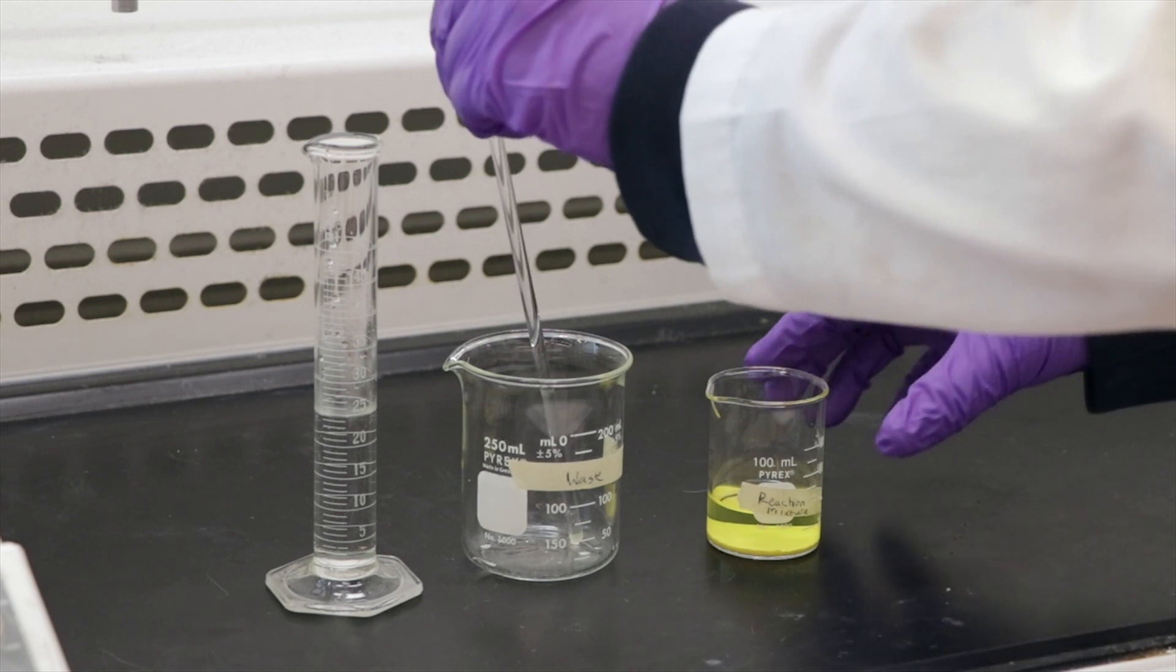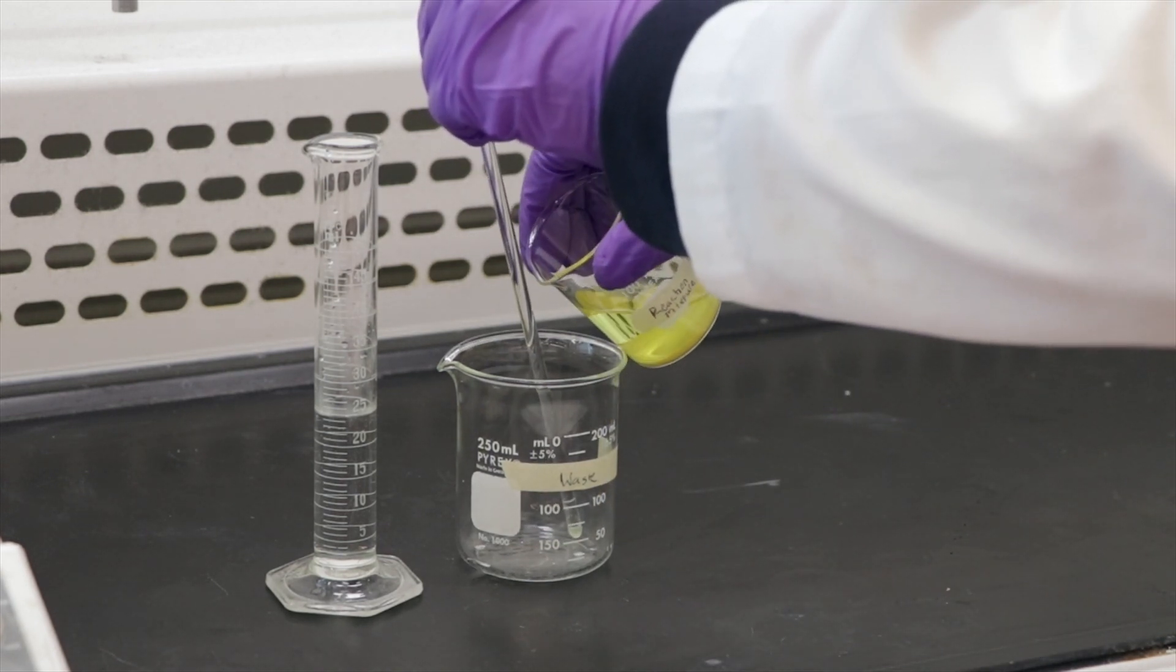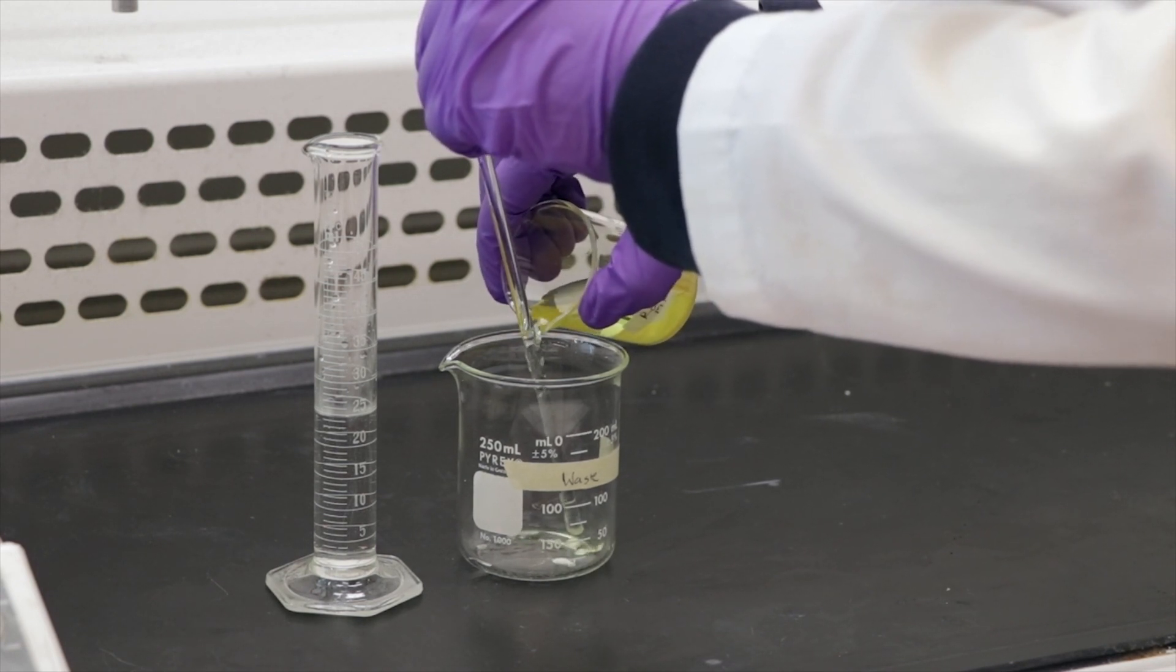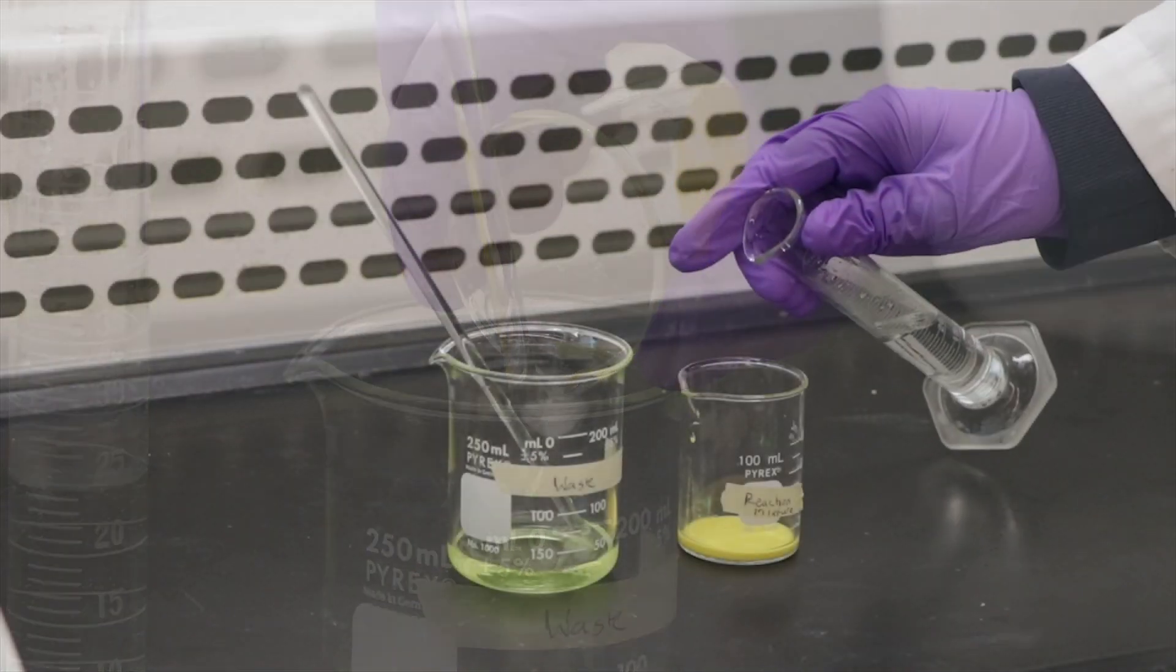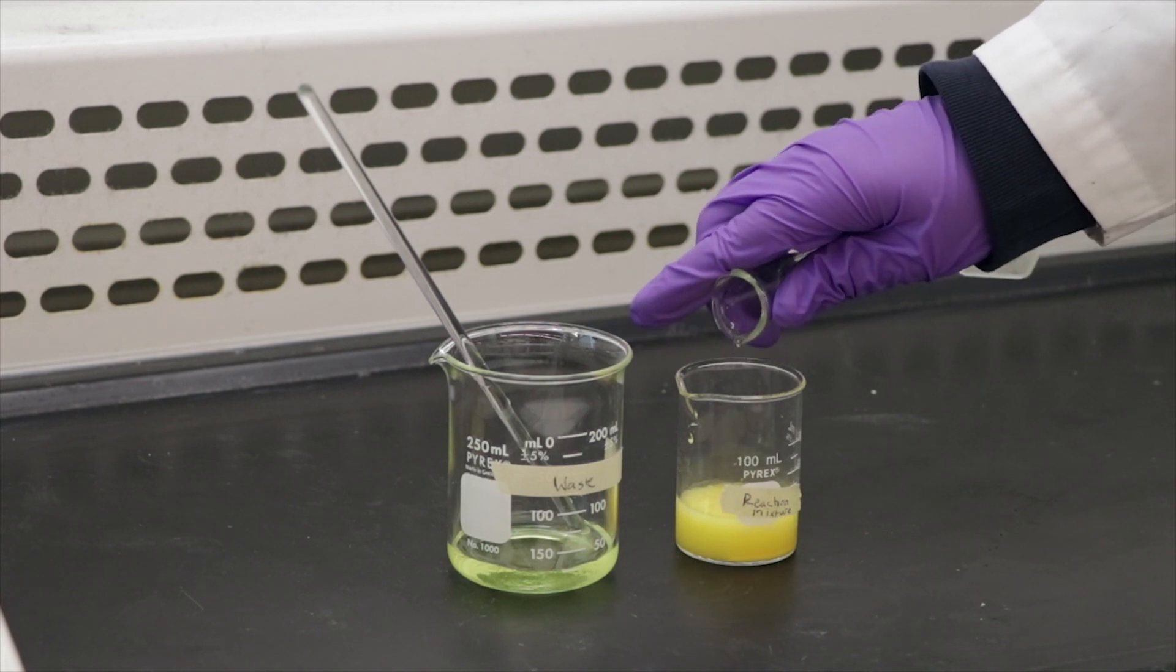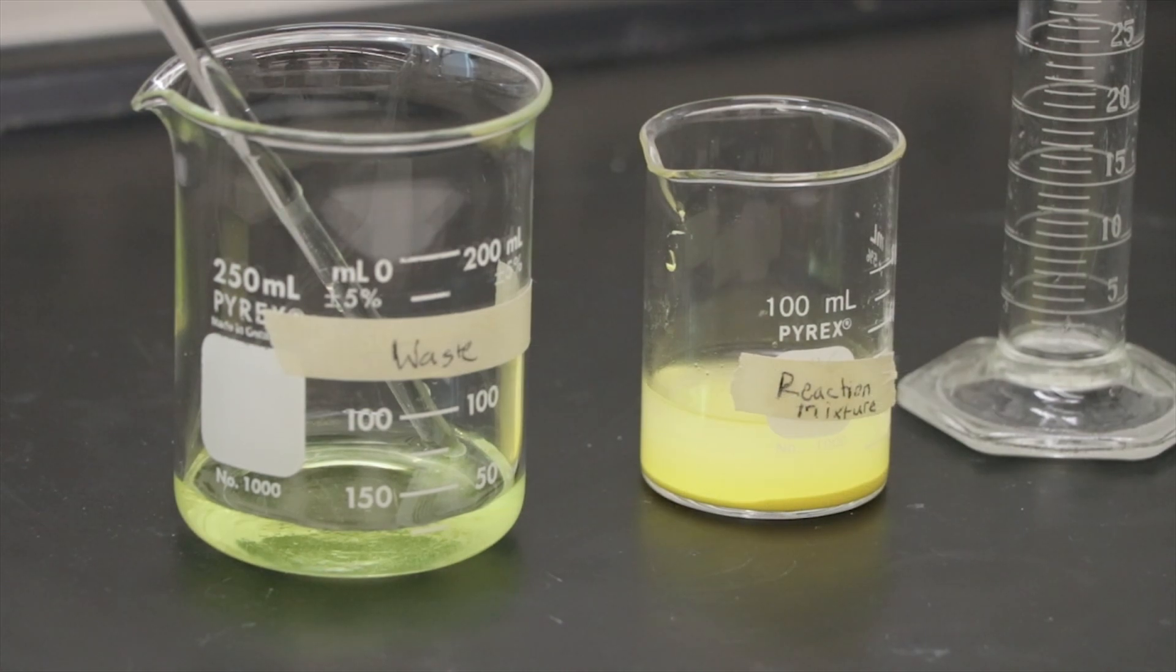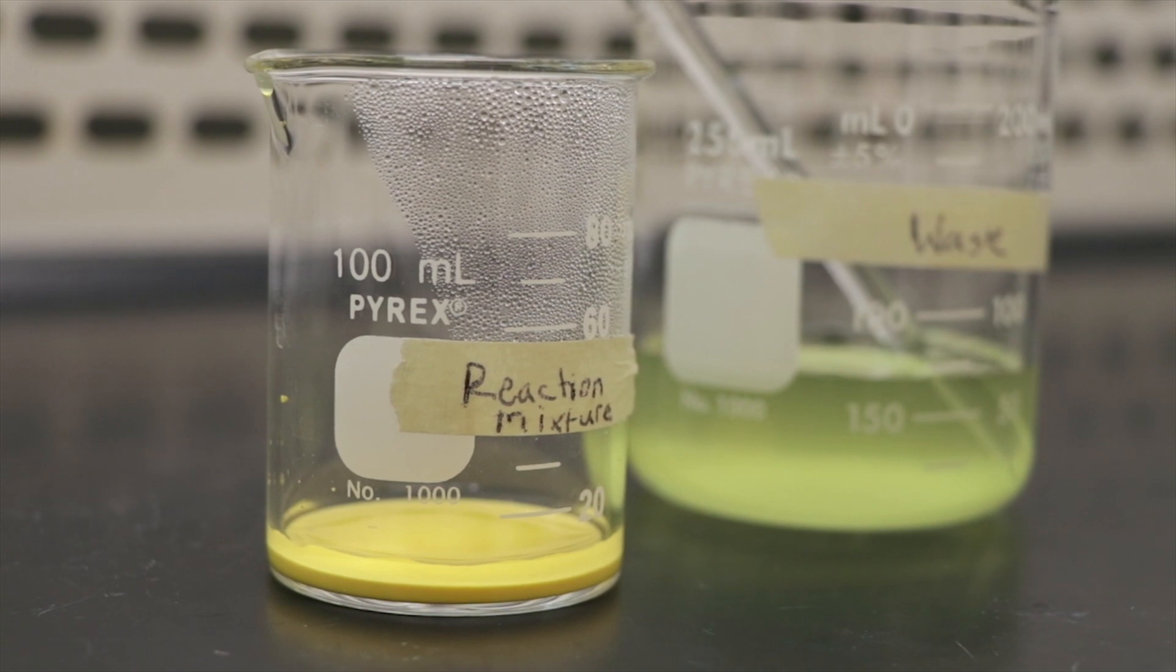Decant the reaction mixture making sure to dispense only the liquid and not the yellow precipitate from your beaker. It's okay if there is still a slight bit of liquid left. After decanting, measure out 25 ml of hot water using a graduated cylinder and add it to your yellow precipitate. Let the precipitate settle again and then decant the solution. Repeat the step once more.